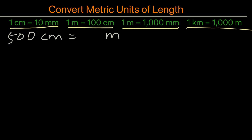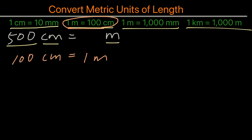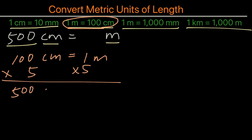500 centimeters equals how many meters? Looking at this example, we can see there are 500 centimeters and we want to convert it to meters. The conversion we want to look at is this one here: there are 100 centimeters in one meter. One meter equals 100 centimeters — we simply multiply both sides by five.